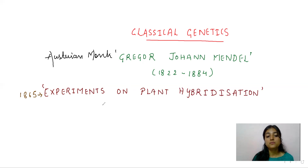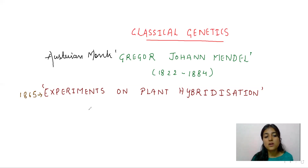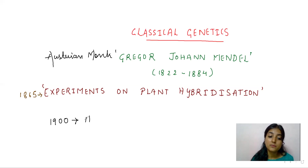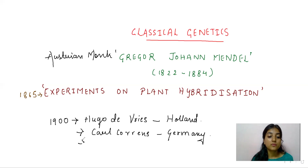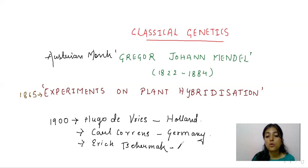The scientists did not accept his experiments because they thought that, being a monk, he was not capable of doing such experiments. So they highly ignored his work. But in the year 1900, there were three scientists: Hugo de Vries from Holland, Karl Correns from Germany, and Erich Tschermak of Austria.